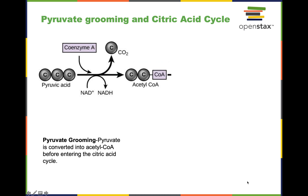During this process, pyruvate is converted to a molecule of acetyl-CoA. It also loses one of its carbons, so we're going from a three-carbon molecule to a two-carbon molecule — that's all that's left from the original glucose. In the same process, pyruvic acid also loses electrons, and it gives those electrons to NAD+, so we make NADH as well.